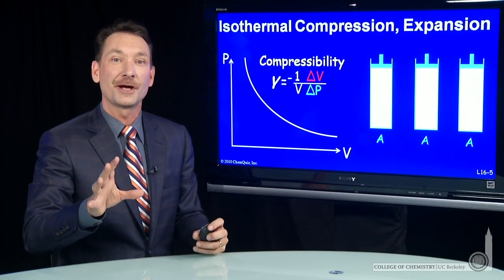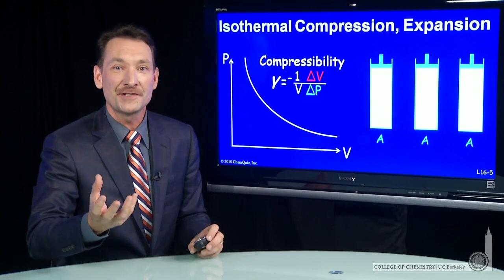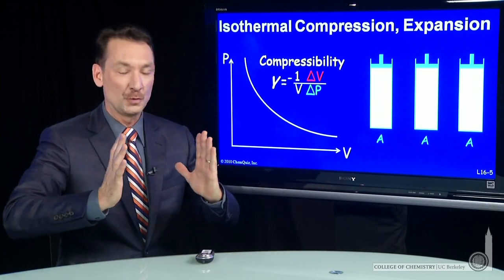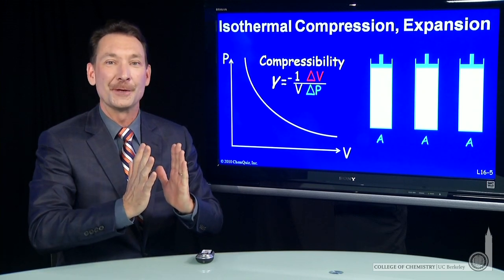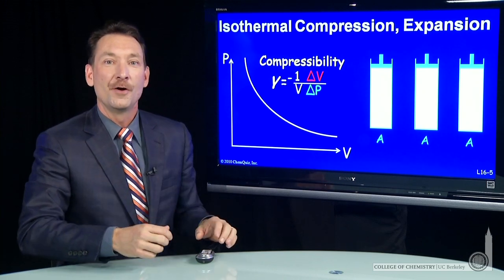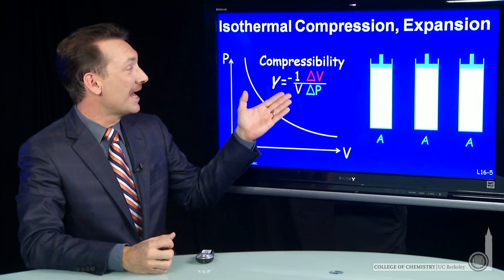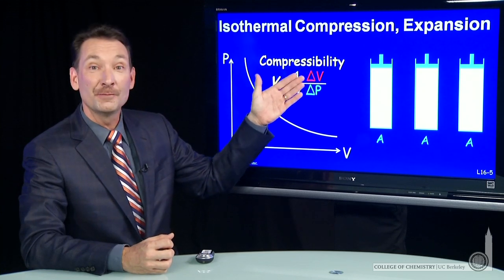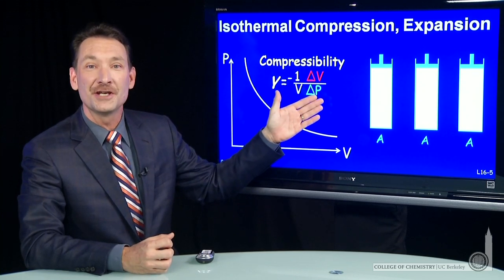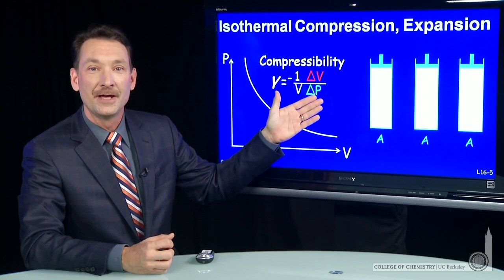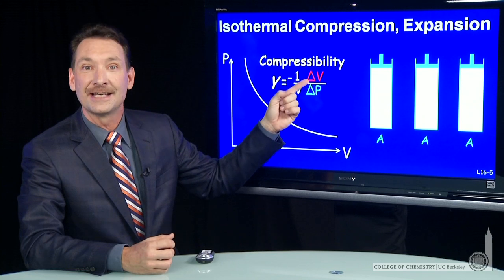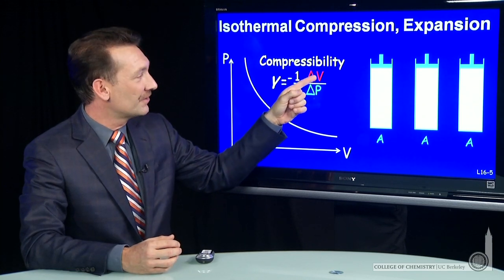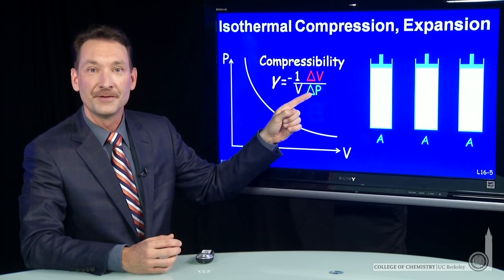Another property of gases that we can talk about is their compressibility — how easy is it to squeeze them into a smaller volume? We define that as the ratio of the change in volume over the change in pressure. We use the symbol delta to indicate a change, so a change in volume over a change in pressure.